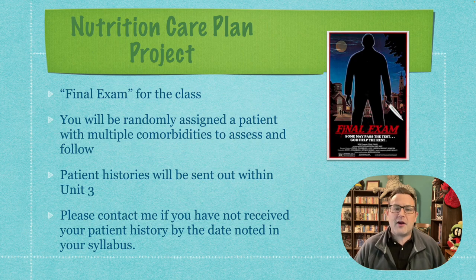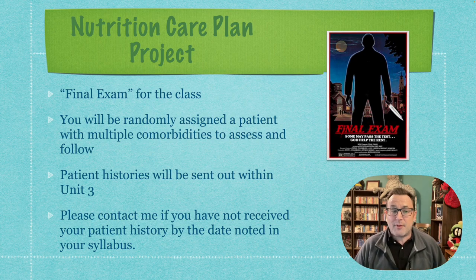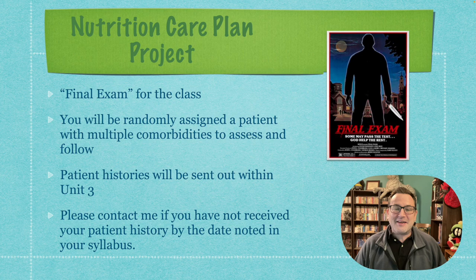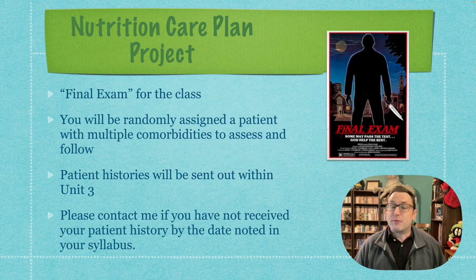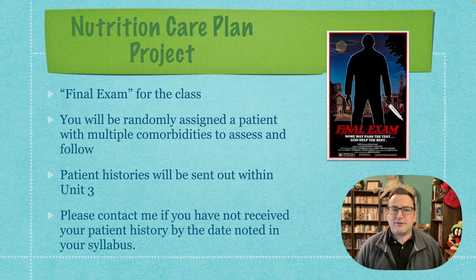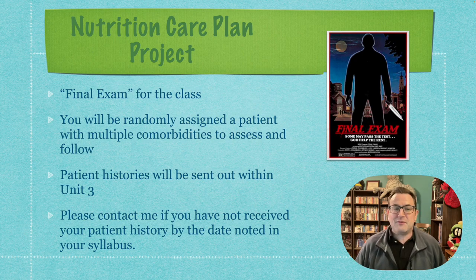The nutrition care plan project is the final exam for the class. You will be randomly assigned a patient with multiple comorbidities to assess and follow. These patient histories will be sent out within unit four. If you haven't received your patient history by the date listed on the syllabus and schedule, please contact me, because that means something went wrong — Blackboard doesn't always reliably send them out.